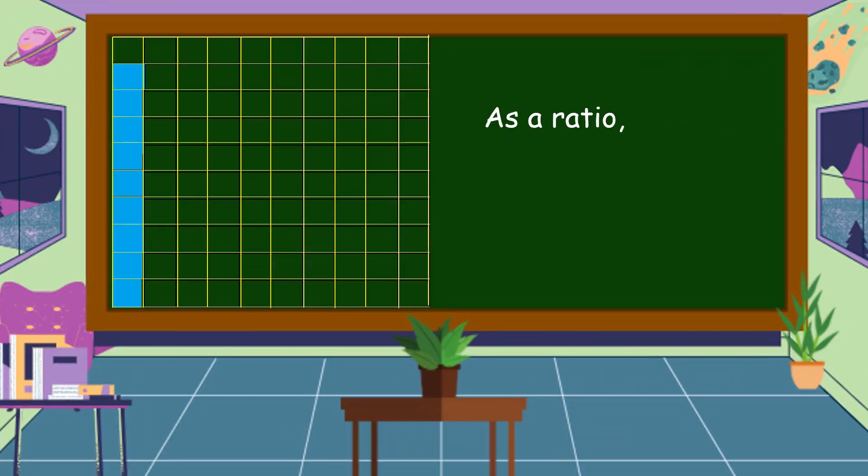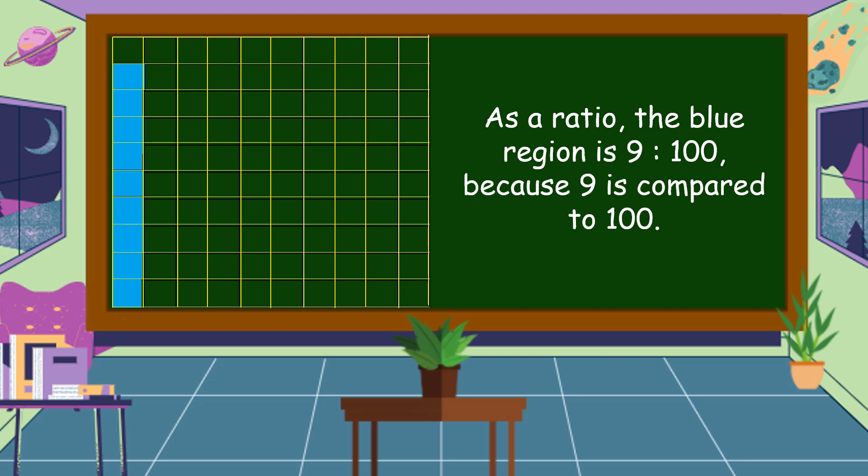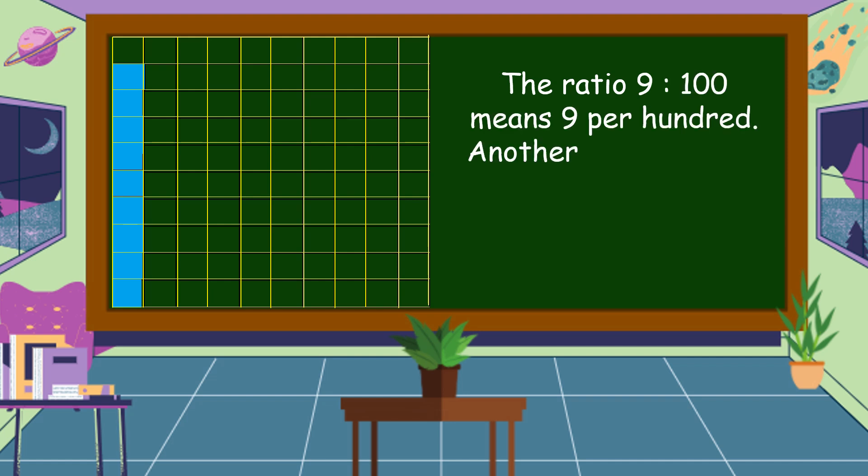As a ratio, the blue region is 9 is to 100 because 9 is compared to 100. The ratio 9 is to 100 means 9 per 100.